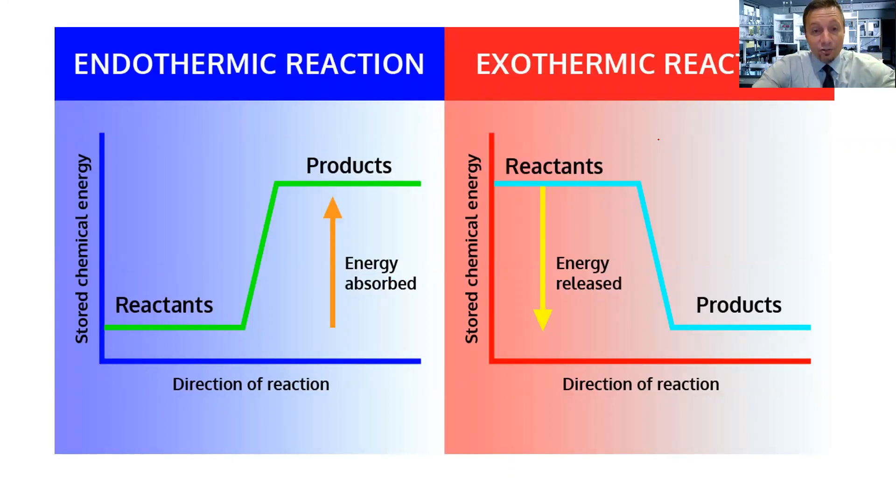We looked at a number of graphs already. Graphs are really important. Here is just the basic look of endothermic versus exothermic. Endothermic, the products have more potential energy. They have absorbed energy from the surroundings. The system absorbed energy from the surroundings. When you look at the exothermic, now you have your products down here, which means they have less potential energy. The reaction released energy from the system into the surroundings.